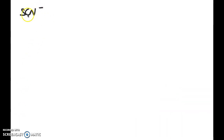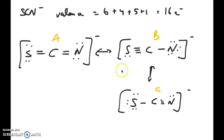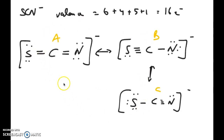Now let's do a second example: the SCN minus ion. You should try to draw the different non-equivalent resonance structures for SCN minus yourself. Here are the three structures — remember to satisfy the octet rule for C and N. They are non-equivalent even before calculating formal charges because the bonding pattern between S, C, and N differs across the three structures. Go ahead and calculate the formal charges on your own.